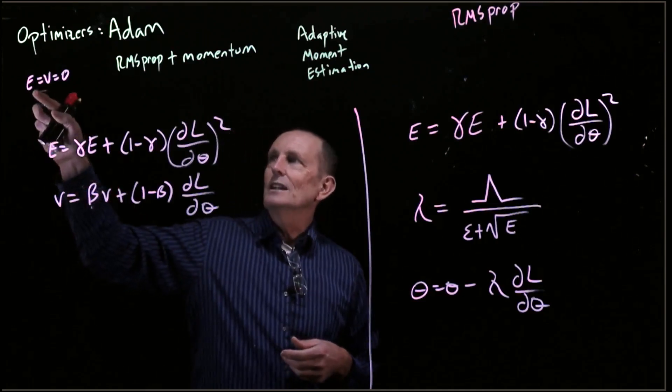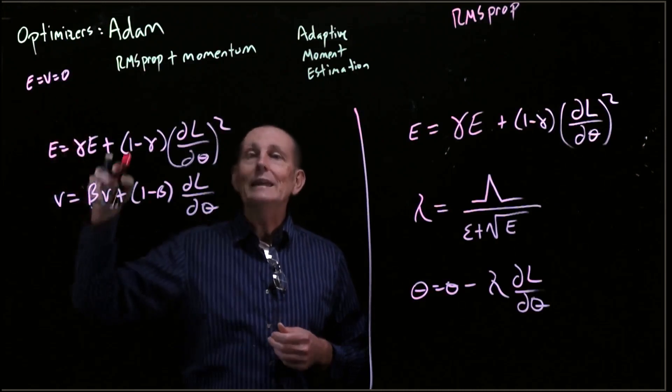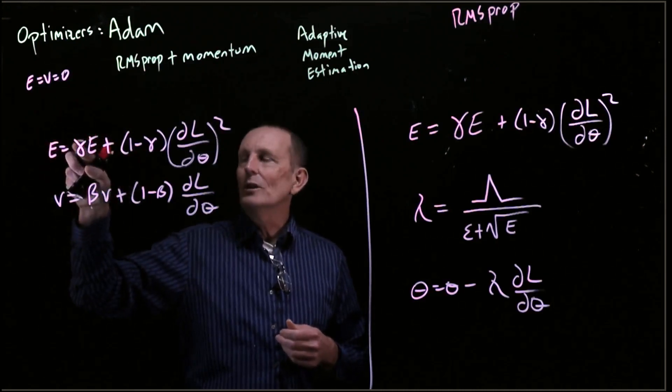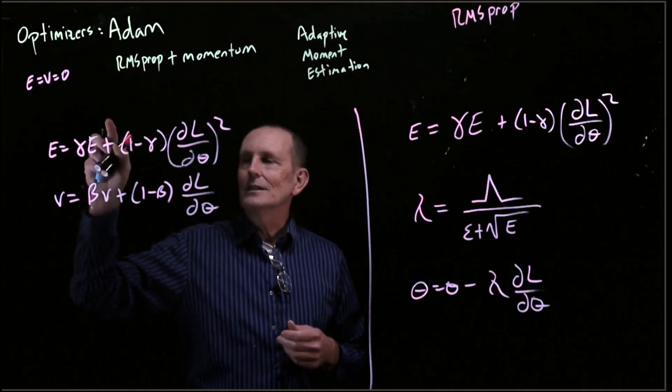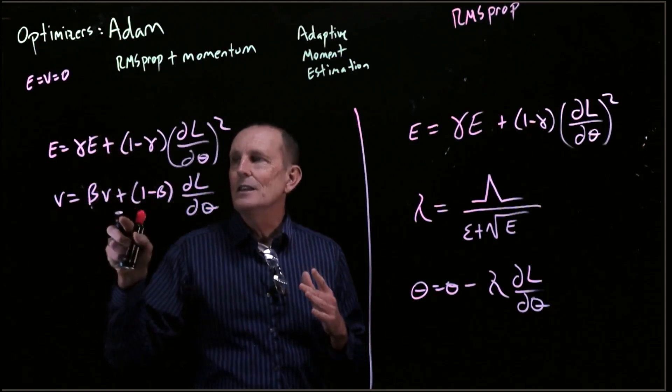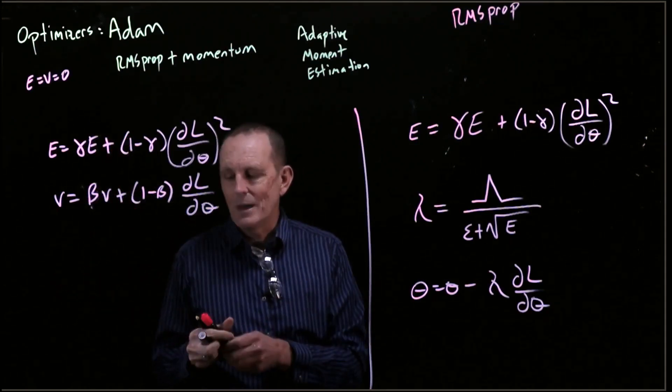Because of the fact that we initialized E equals V equals zero, we've got this weighting of zero. And over time, as we have alpha to the K or beta to the K, large enough, these old estimations of zero aren't going to really matter.